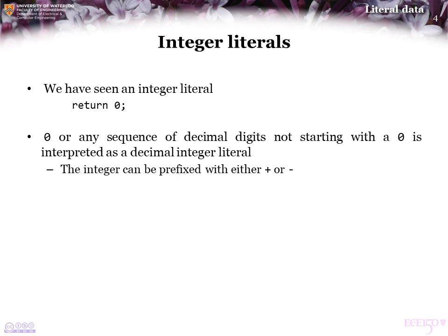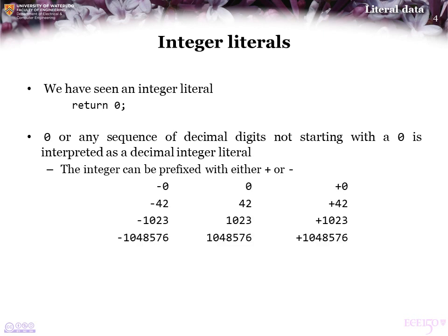This number can be prefixed either with a plus or a minus. All of the following are literal integers. In the first column, other than negative 0 which equals 0, the others represent negative integers. In the center and right columns, those represent positive integers. The plus in front is not necessary, but C++ does allow it.